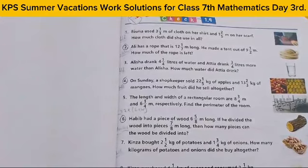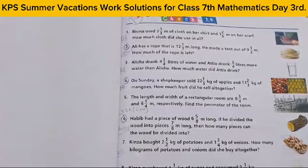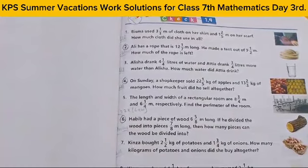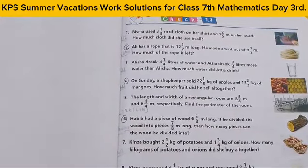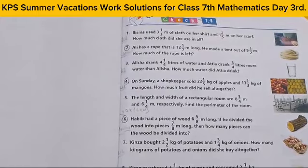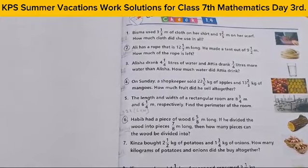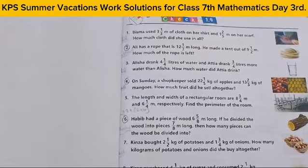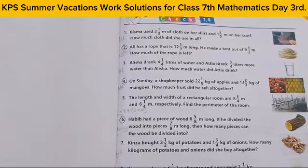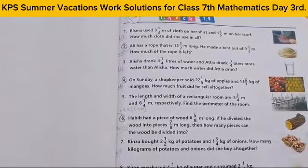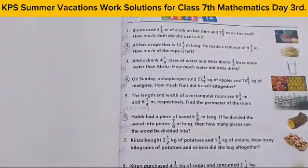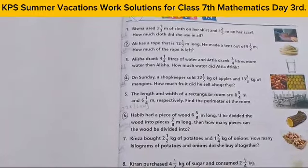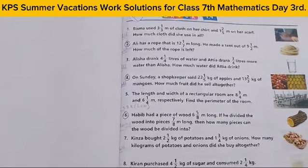Ali نے ایک لمبی رسی لی ہے، اس کی length آپ کو بتا دی گئی ہے۔ اس نے tent بنایا ہے جس میں اس رسی کو استعمال کیا ہے، وہ بھی آپ کو بتا دیا گیا ہے۔ باقی بچی ہوئی رسی آپ نے بتانی ہے۔ یہ question آپ کے پاس mix fraction form میں دیا گیا ہے، آپ نے fraction form میں convert کرنا ہے پہلے، پھر آپ نے ان دونوں کو minus کر دینا ہے۔